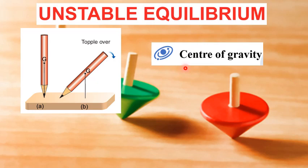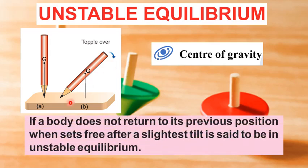The center of gravity of the body is at its highest position in the case of unstable equilibrium. As the body topples over its base, its center of gravity moves towards its lower position and does not return to its previous position. Hence, we can define unstable equilibrium as: if a body does not return to its previous position when set free after the slightest tilt, it is said to be in unstable equilibrium.